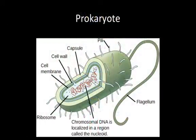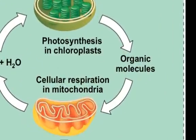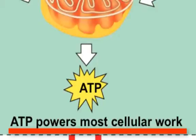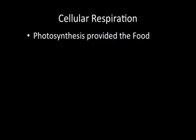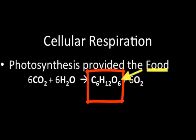Prokaryotes do respiration as well, but they don't have the mitochondria organelle to do this. They use the materials in their own membranes to perform the task. The goal of respiration is to transfer the free energy of the organic compounds into a simpler molecule of ATP. The energy for the cell's work is delivered by the ATP molecule. So for respiration, we need chemical energy, or food. Photosynthesis provided the food.